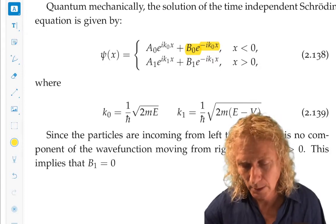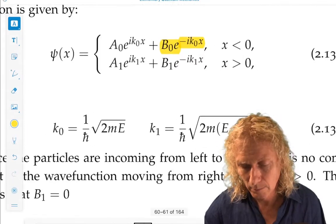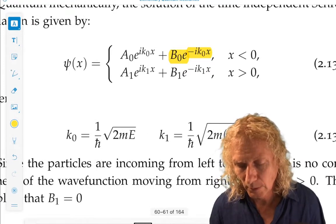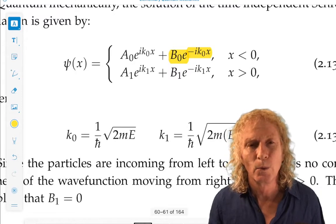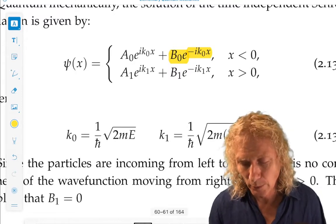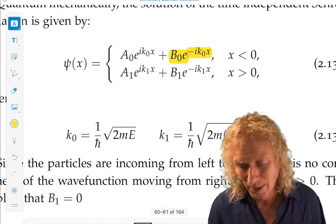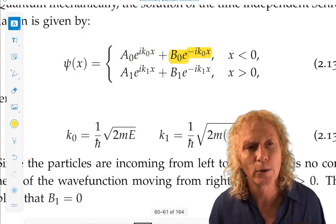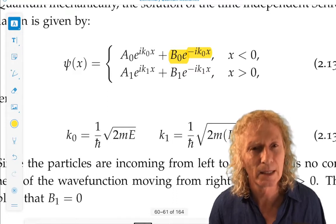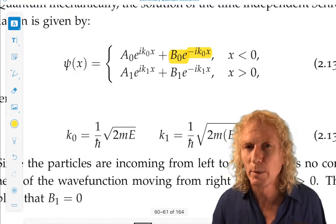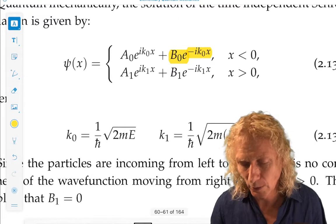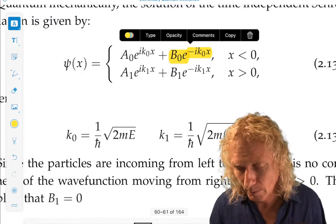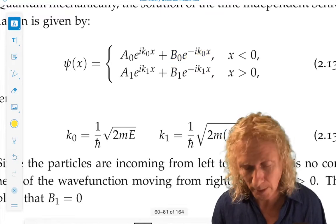Conservation of probability. We have two terms corresponding to particles moving from left to right, and the possibility that particles are reflected from the potential step. Well, this seems a little bit weird because energy is greater than the potential step, but we include this anyway and see what happens.